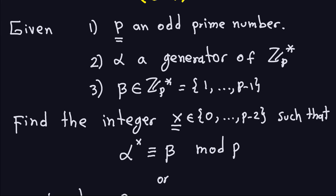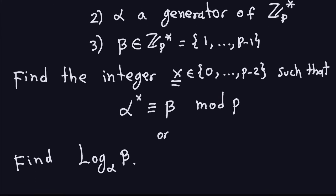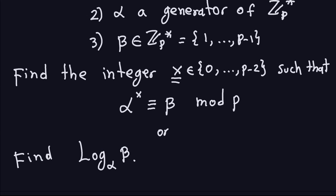Another way to say it is: find the discrete logarithm of beta. They give you alpha — the generator — and beta — a number — and of course the prime P. So they give you three pieces of information, and then you have to compute this. That's the discrete logarithm problem.